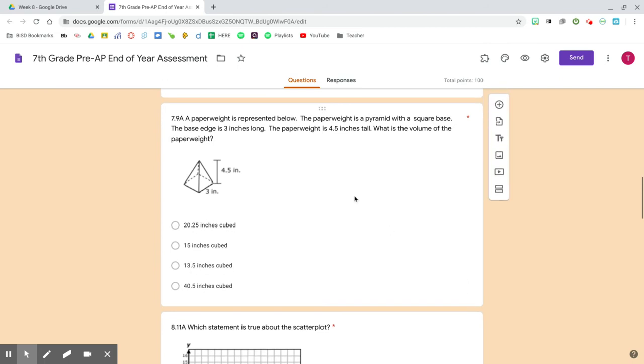Question 3. A paperweight is represented below. The paperweight is a pyramid with a square base. The base edge is 3 inches long. The paperweight is 4.5 inches tall. What is the volume of the paperweight? 20.25 inches cubed, 15 inches cubed, 13.5 inches cubed, 40.5 inches cubed.